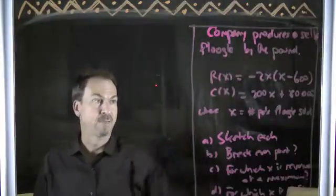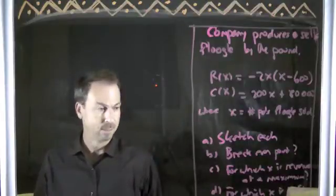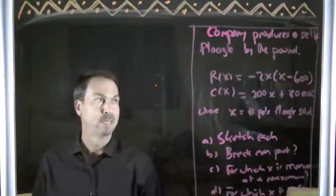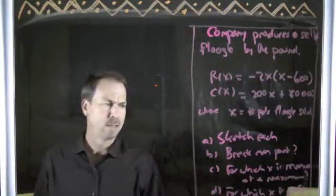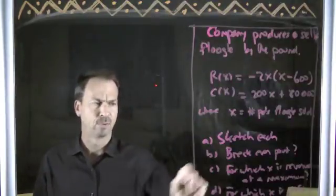But the question says, sketch a graph of the cost and revenue functions. Tell me about the break-even point. Where is it? For which x is the revenue at a maximum? Like how many pounds of flugel should they make per day to maximize their revenue? And then part D is how many pounds of flugel should they make per day to maximize their profit? Hmm, a little bit strange. What was going on there?